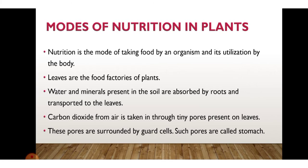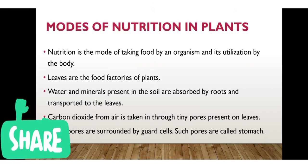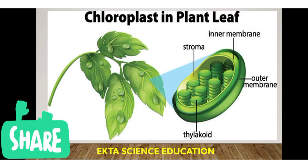We eat many green leafy vegetables like spinach, fenugreek, and dill — we are eating the plants' leaves. Water and minerals present in the soil are absorbed by the roots and transported to the leaves. Carbon dioxide from the air enters through tiny pores on the leaves surrounded by guard cells, called stomata.